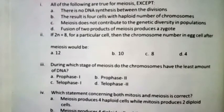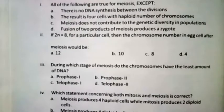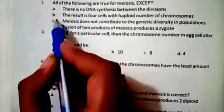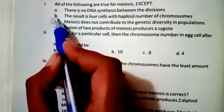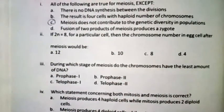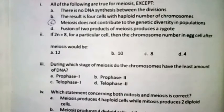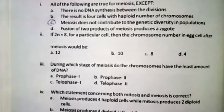Now we come to unit number five, which is the Cell Cycle. Question one: All of the following are true for meiosis except C — meiosis does not contribute to genetic diversity in the population. Question two: If 2n = 8 for a particular cell, the chromosome number after meiosis would be 4.